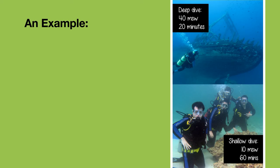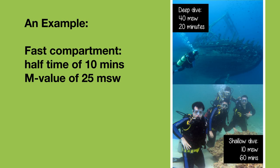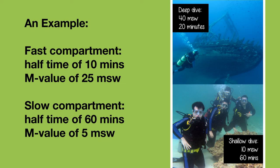Let's do an example with numbers so you can see for yourself. Let's look at two compartments: a fast compartment with a half time of 10 minutes and a high M value of 25 meters of seawater, and a slow compartment with a half time of 60 minutes and a low M value of 5 meters of seawater.